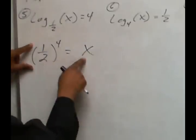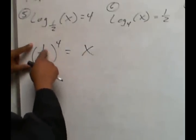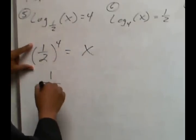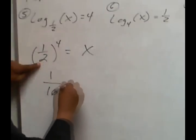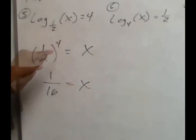So, to find x, we need to raise this to the fourth power, so 1 times 1 times 1 times 1 is 1, 2 times 2 is 4, and 4 times 4 is 16. And so, x is 1 to 16.